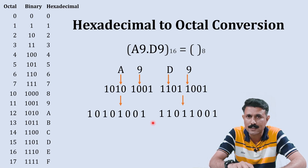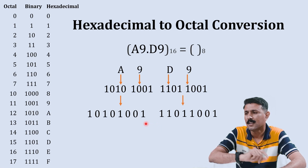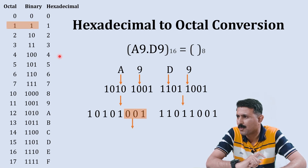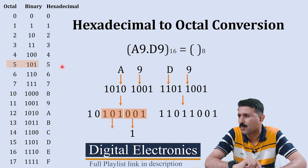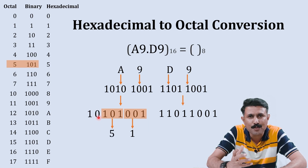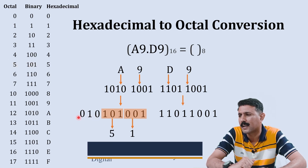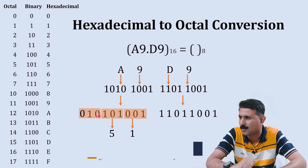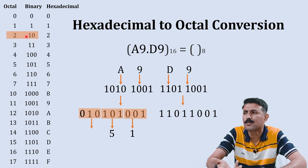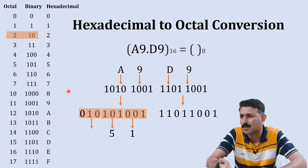To convert binary to octal, we create groups of three bits starting from the least significant bit. The first group is zero zero one, which is equivalent to one. The next group is one zero one, equivalent to five. The remaining digits one and zero need one more zero added on the left, making zero one zero, which is equivalent to two. So two five one is the octal equivalent of A9 in the integer part.